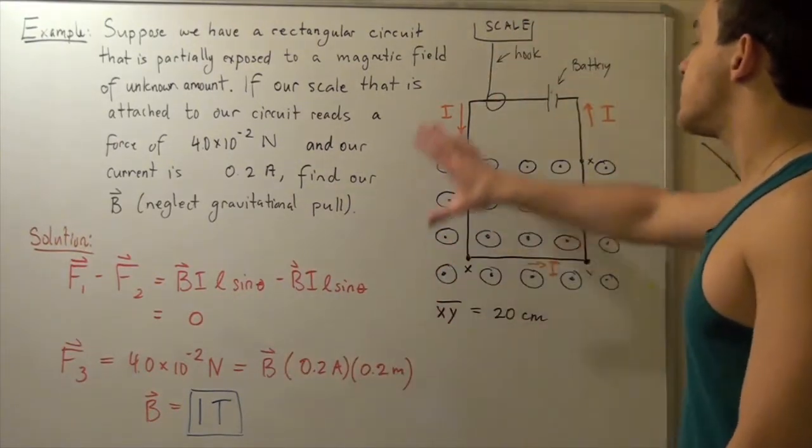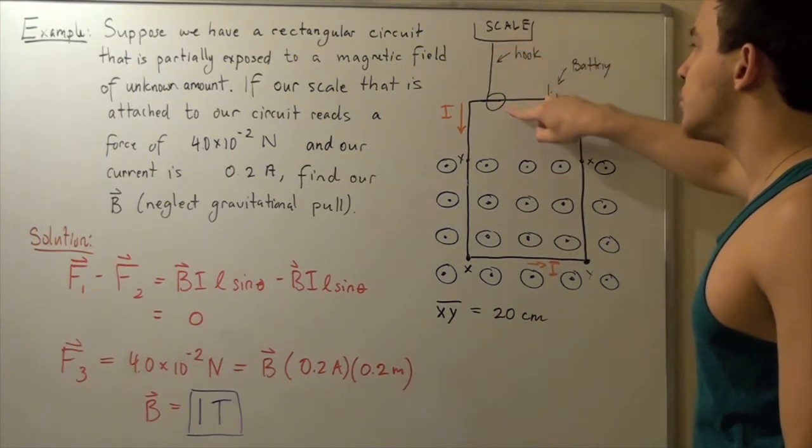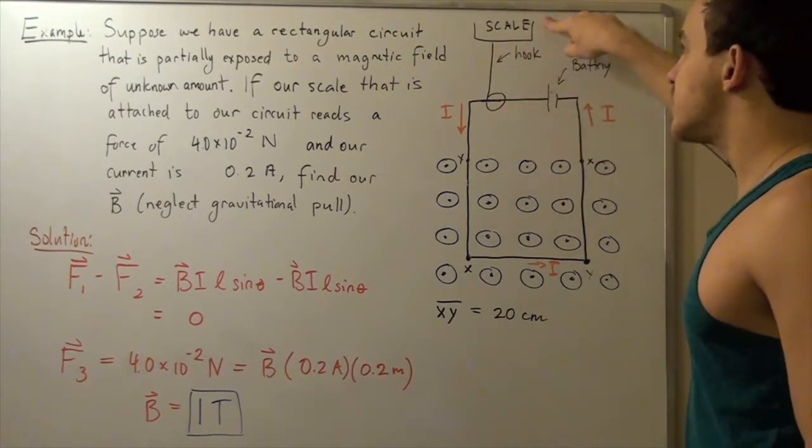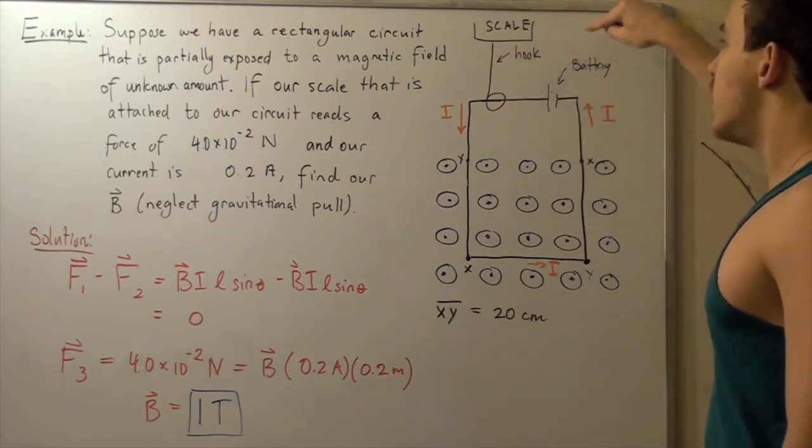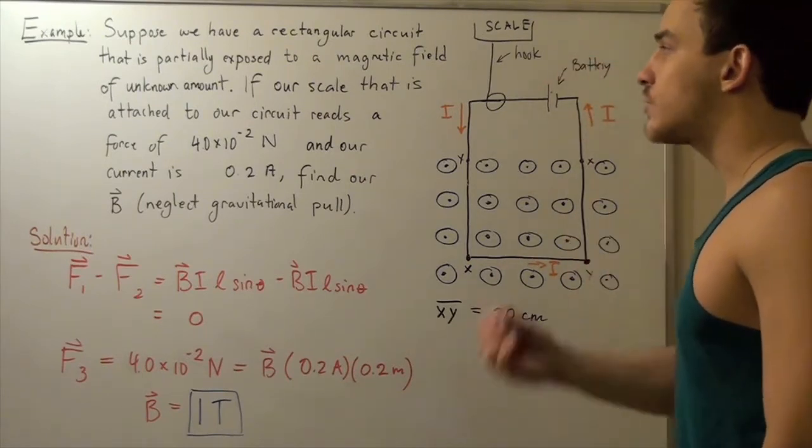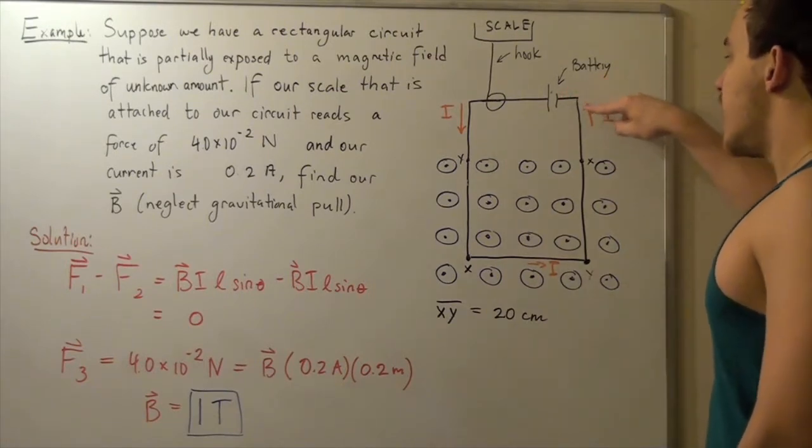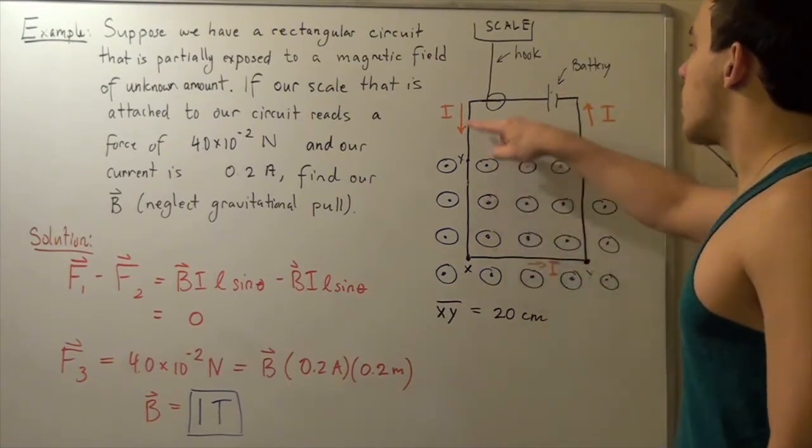Let's look at our experimental setup. Here's our scale that is attached by a hook to our electric circuit, and this scale reads our force. This battery on our electric circuit provides a flow of electrons, and that means electrons will flow from our anode in this direction into our cathode.